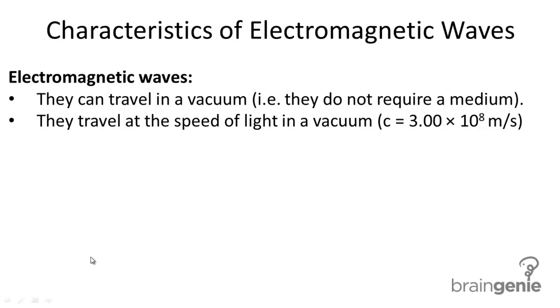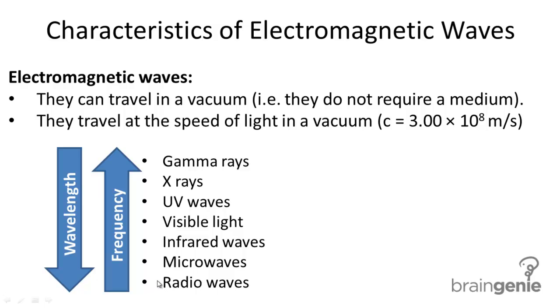To give you a list of all the different types of EM waves, here is the electromagnetic spectrum. Starting from the bottom: radio waves, microwaves, infrared waves, visible light, UV waves, X-rays, and gamma rays.